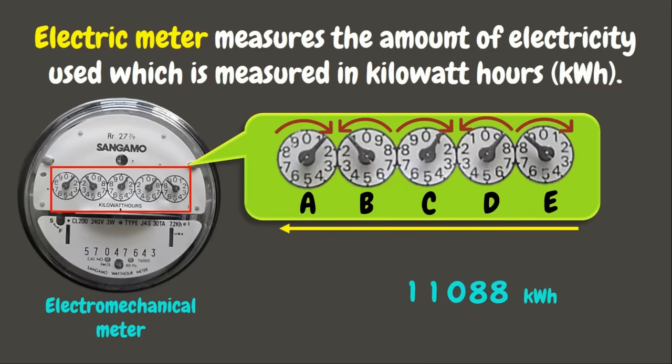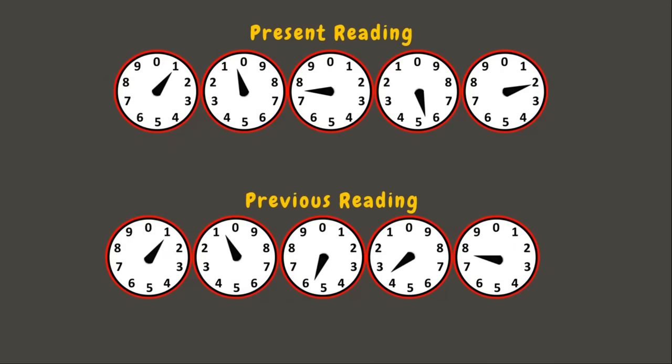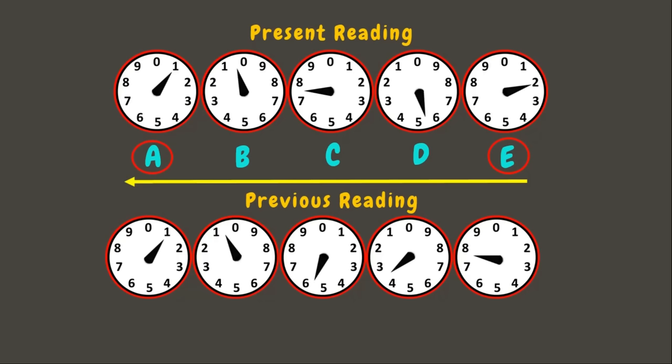Now let's go back and solve our problem. First, we need to read the present and previous readings of the electric meter — reading from right to left, dial E to dial A. In dial E, the pointer points exactly at 2. Since it does not have a dial to its right, that will be our dial E reading. Next, in dial D, the pointer points between 5 and 6, so we'll record the smaller number which is 5.